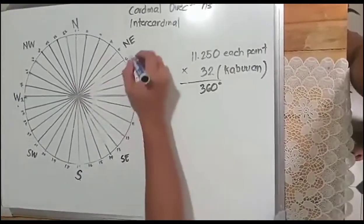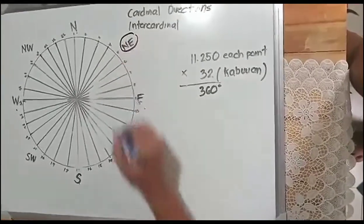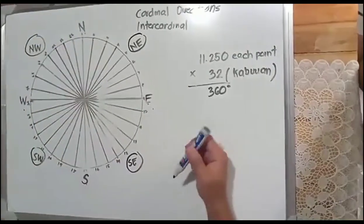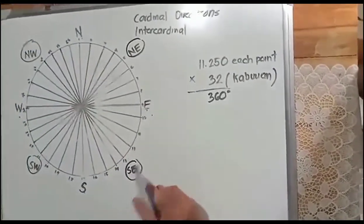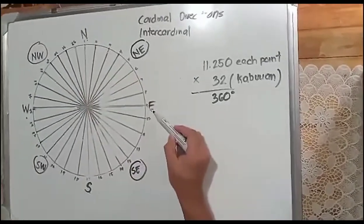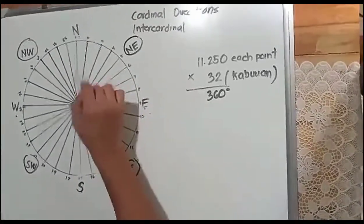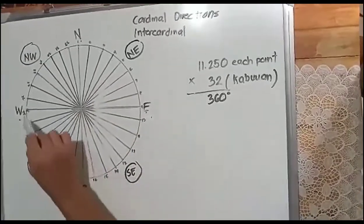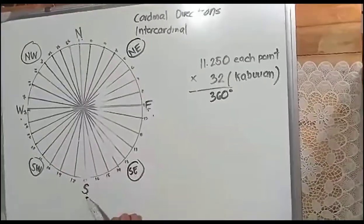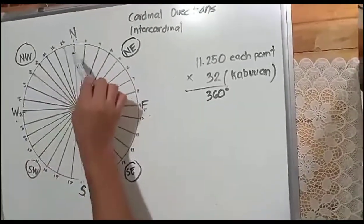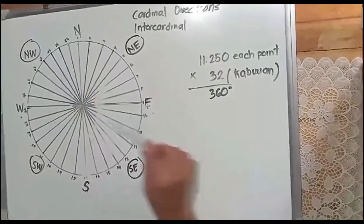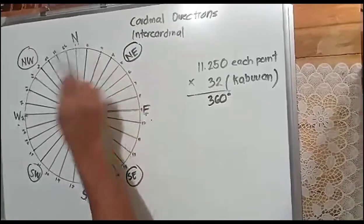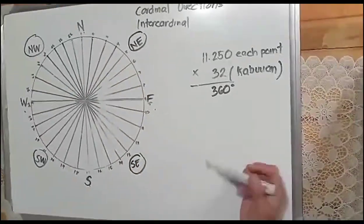What are ordinal directions? The ordinal direction is commonly known as intercardinal direction, like northeast, southeast, southwest and northwest. How do we obtain this? We obtain this by simply combining the two cardinal directions in each quadrant.